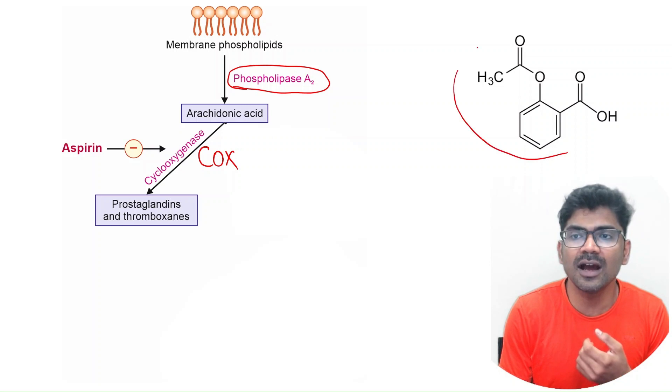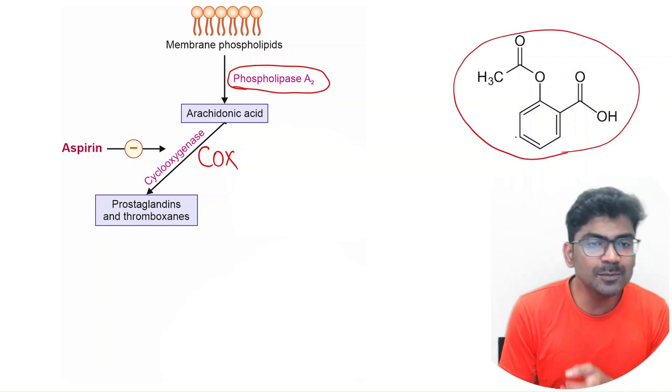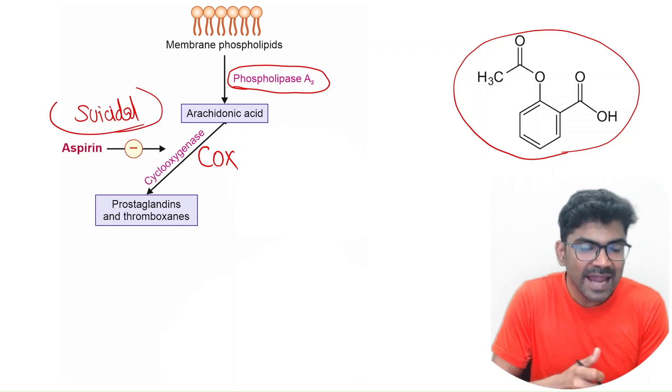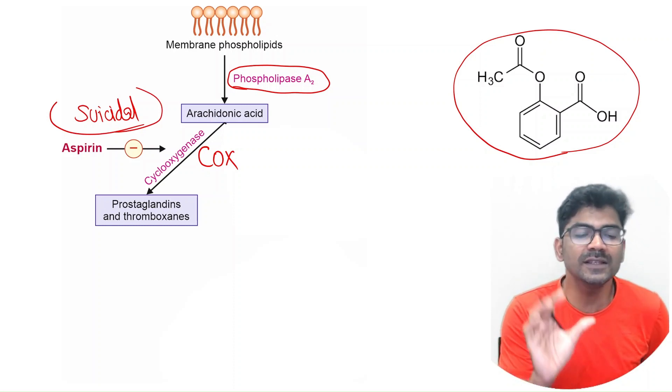What is aspirin? Acetyl salicylic acid. Aspirin is a suicidal inhibitor or mechanism-based inhibitor of cyclooxygenase enzyme.